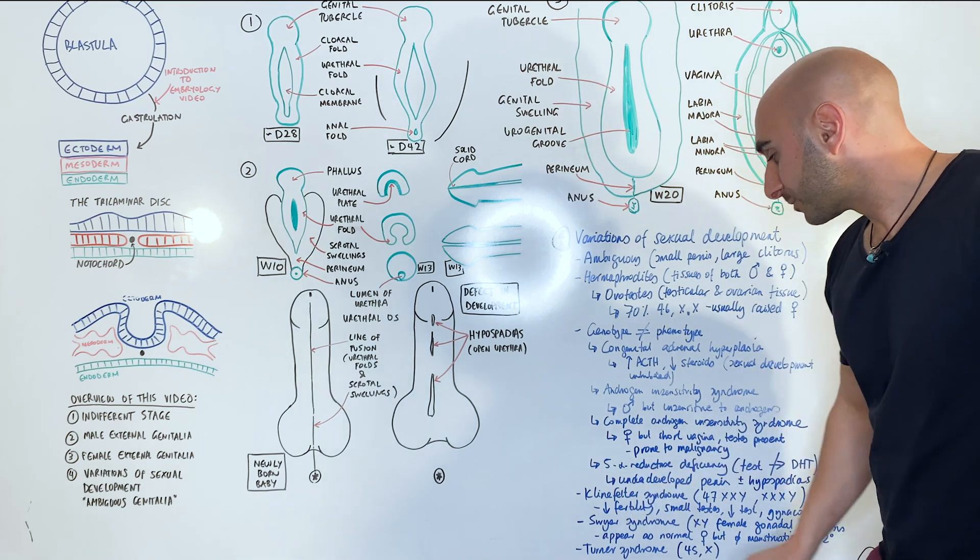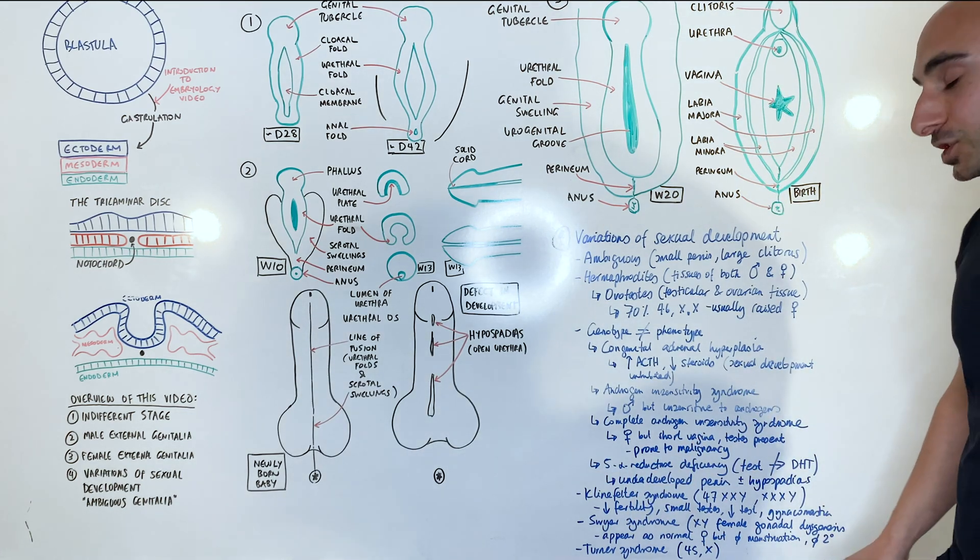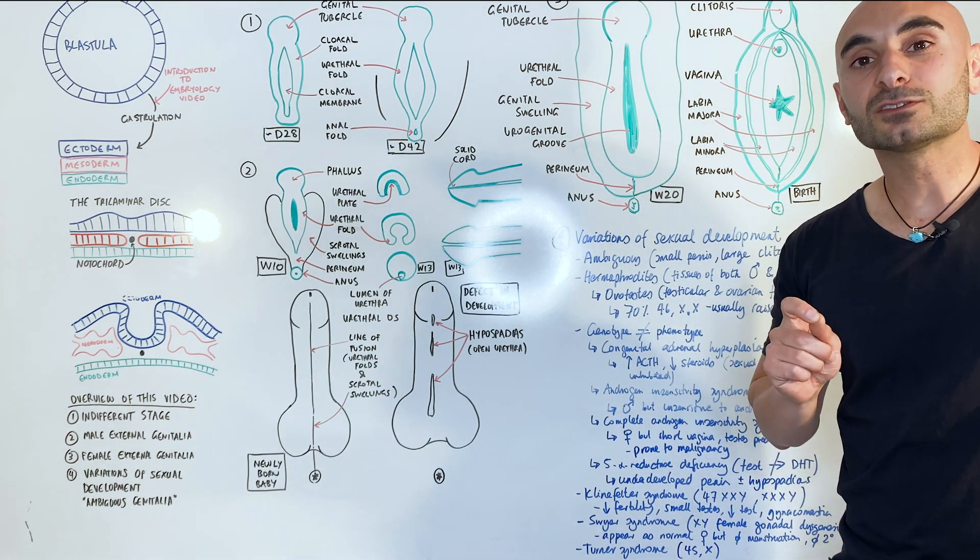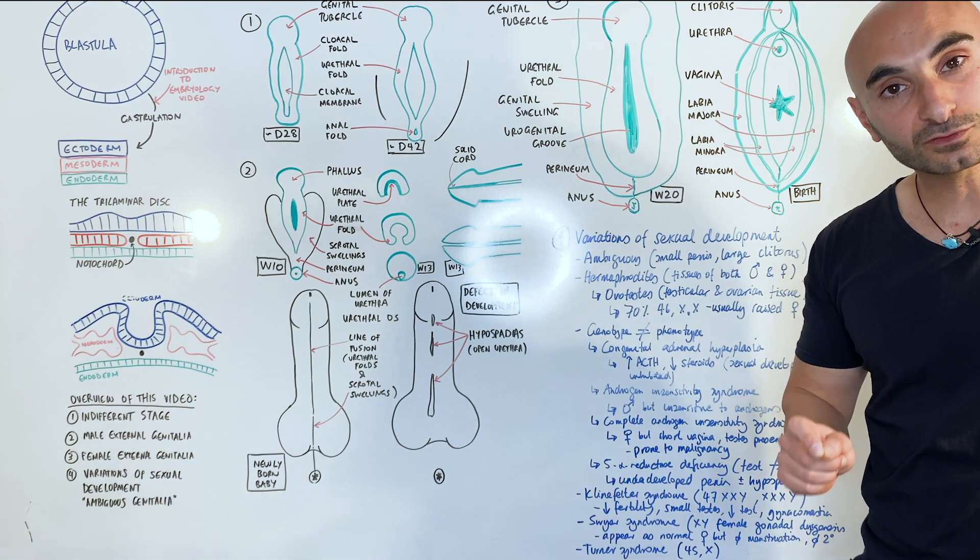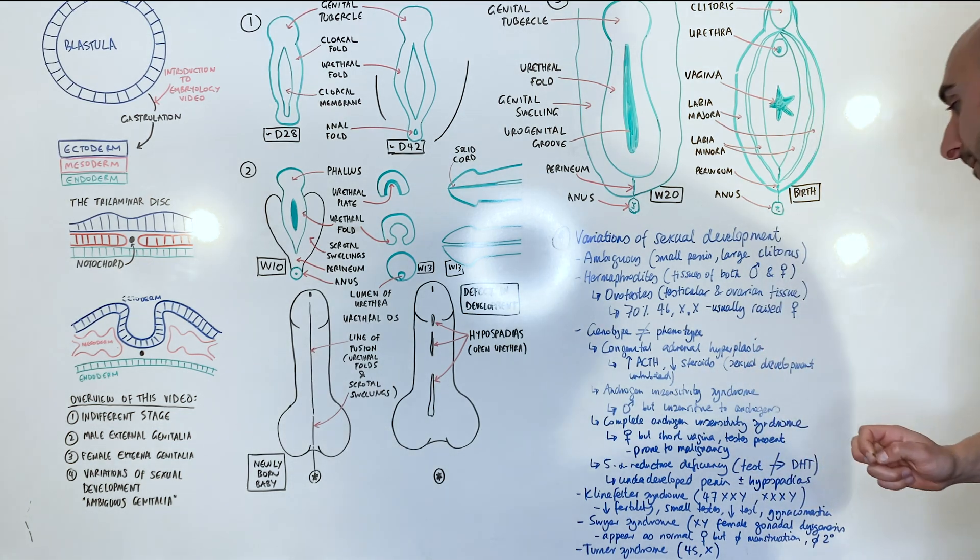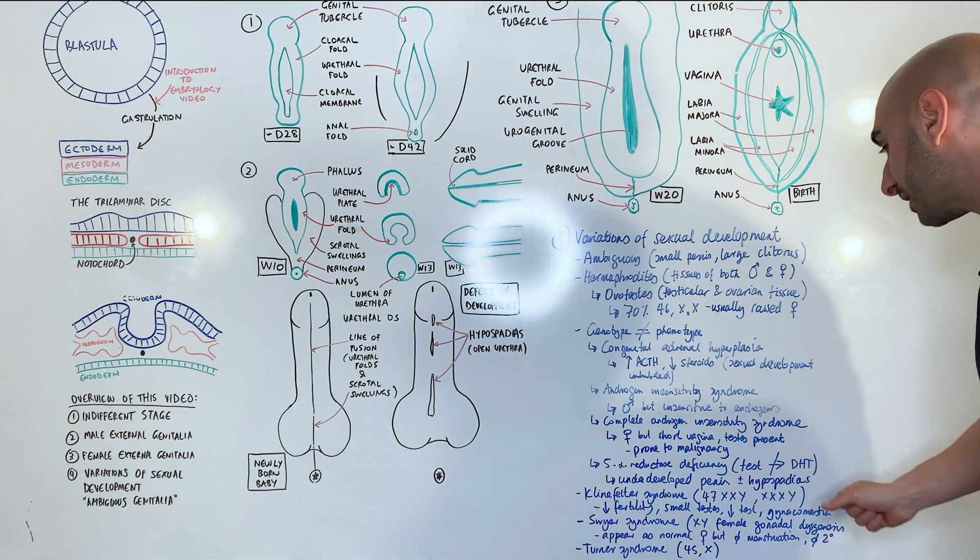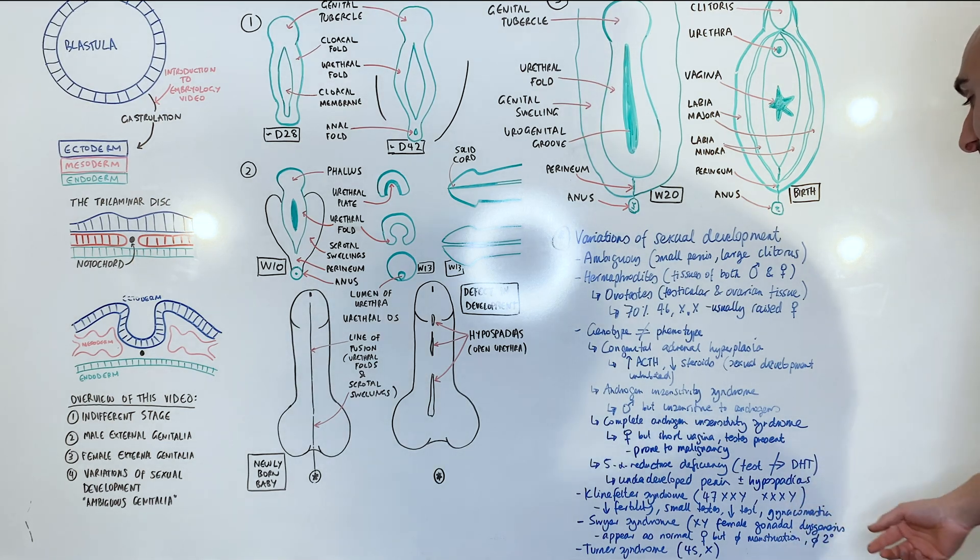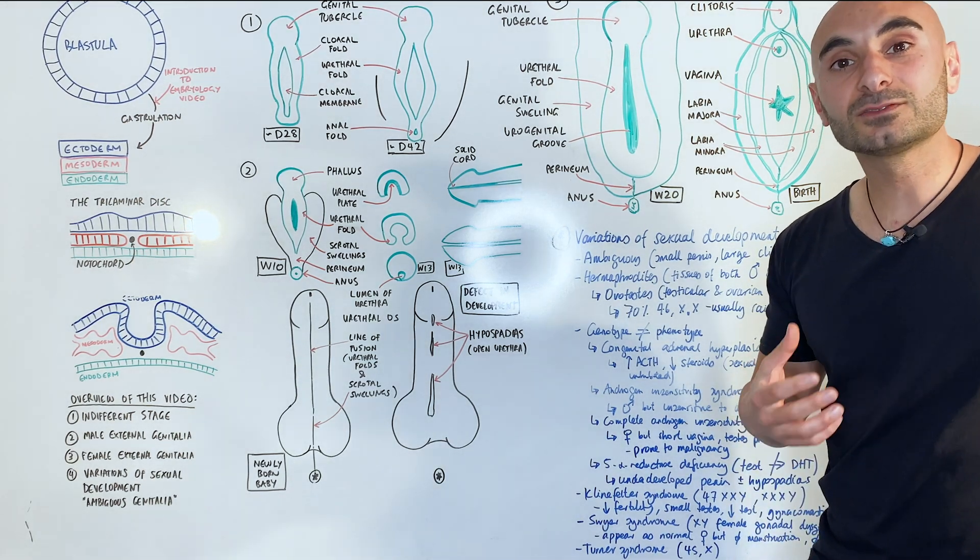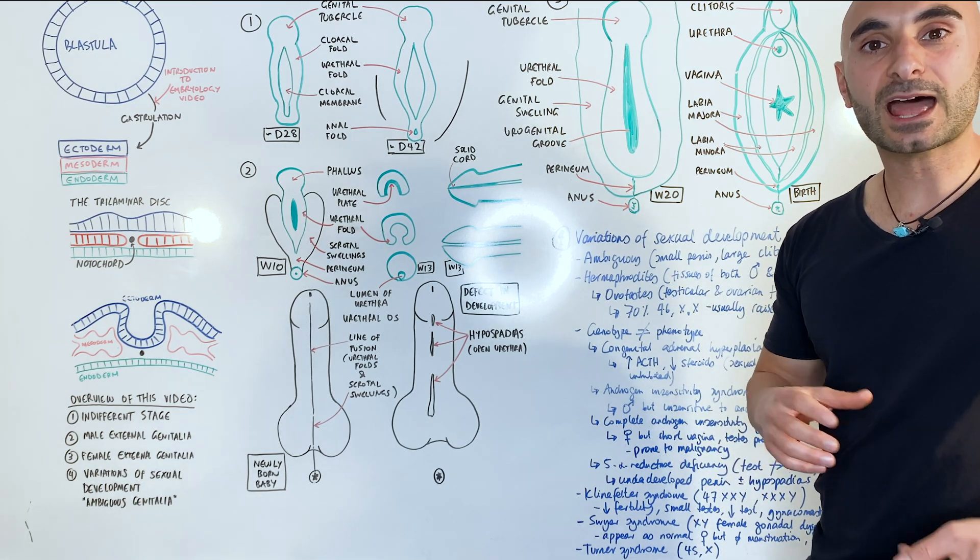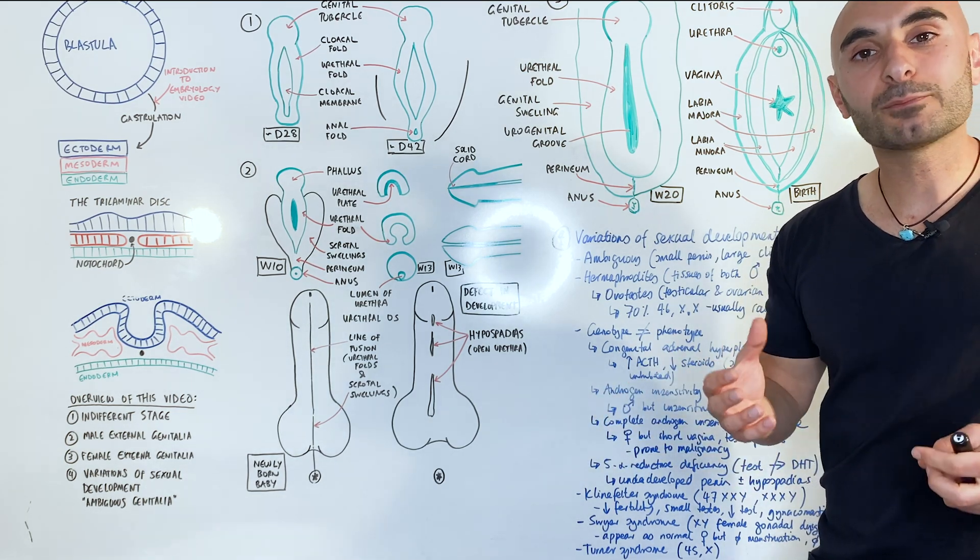Another syndrome where there is a 5-alpha reductase deficiency results in the reduction of dihydrotestosterone conversion from testosterone. And so the people that experience a 5-alpha reductase deficiency will have an underdeveloped penis, as well as may or may not have hypospadias.